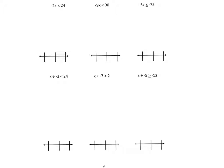For the first one: negative 2x is less than 24. Negative 2x means multiplication, and the opposite of multiplication is division. We divide both sides by negative 2: 24 divided by 2 is 12, the signs are different so it's negative, and our symbol flips. So we have x is greater than negative 12. We know it's an open circle at negative 12, and we shade everything that is more than negative 12, so we shade to the right. We flip the symbol because we divided by negative 2.